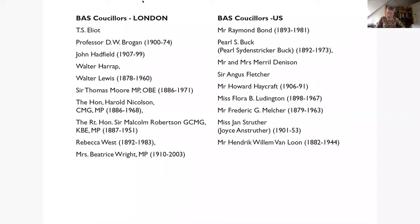Jan Struther was a well-known English writer who developed the character Mrs Miniver, which initially appeared as a column in The Times newspaper. Mrs Miniver became incredibly popular in America — depicting an ordinary British woman living during wartime — and in 1942 a film was made which won six Academy Awards. Struther also wrote popular hymns including 'Lord of All Hopefulness.' Hendrik Willem van Loon, a Dutch-American historian, journalist, and award-winning children's author, had his work banned from Germany but gained respect from Franklin D. Roosevelt, on whose 1940s presidential campaign van Loon worked.